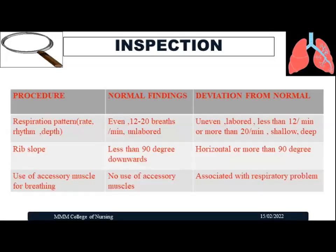Next, assess the rib slope. The normal angle of the rib is 90 degrees downward. Any deviation indicating a more horizontal angle — greater than 90 degrees — is abnormal. Also check for use of accessory muscles for breathing. Normally, patients do not use accessory muscles during respiration. If breathing is difficult, use of accessory muscles such as the sternocleidomastoid or diaphragm becomes common. These are the main findings to identify when inspecting the anterior, posterior, and lateral chest.